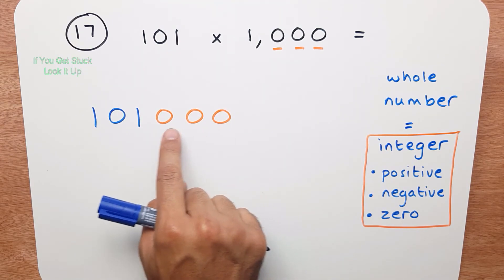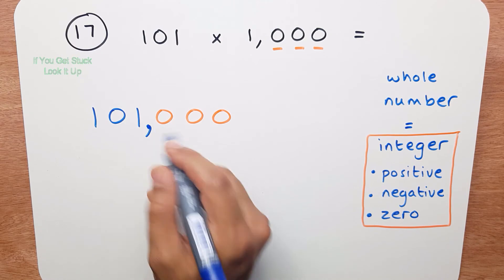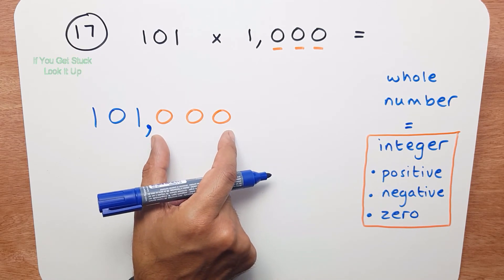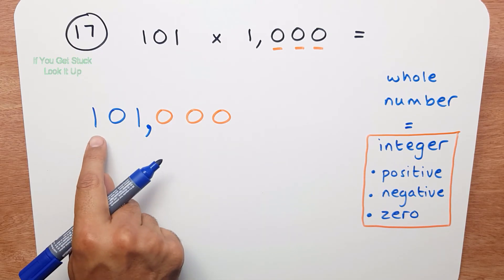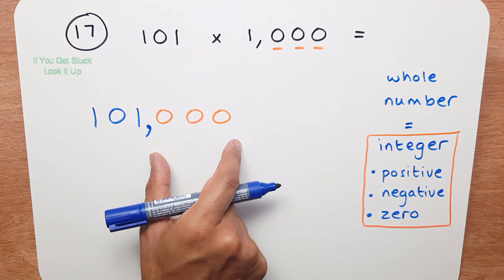As before, 1, 2, 3, comma. So this is the thousands, so it's 101,000.